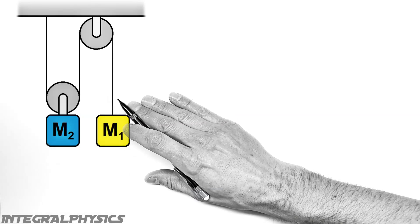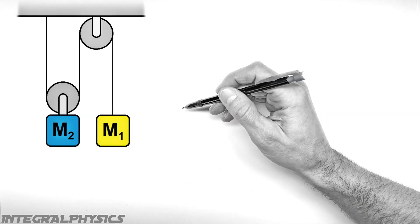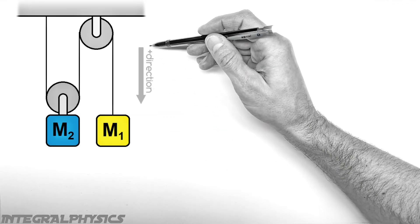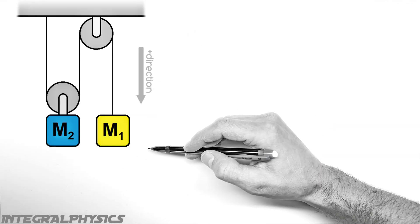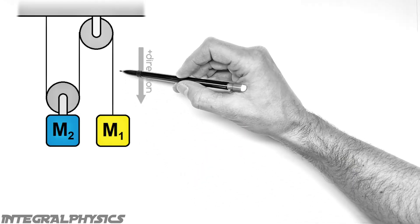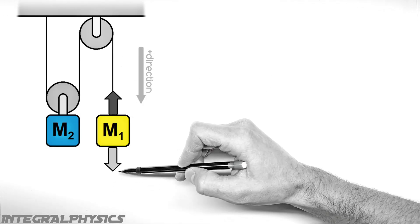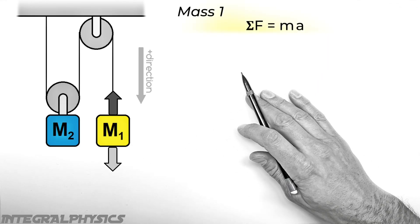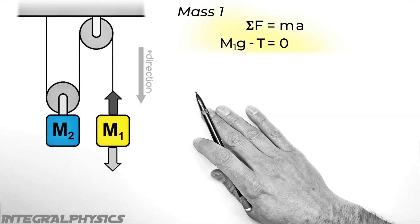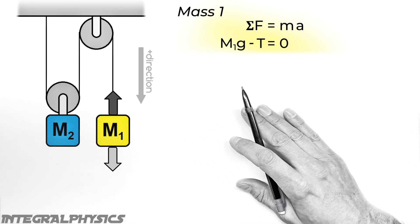So looking first at this block M1 right here, the first thing we're going to do here is establish a positive direction. And that is we're going to say the downward direction is positive. Now looking at the forces which are acting on this block, we've got the tension in the string acting upward and gravity acting downward. So going over here to Newton's second law, that means we're going to have M1G acting downward in the positive direction minus T, which is acting upward.